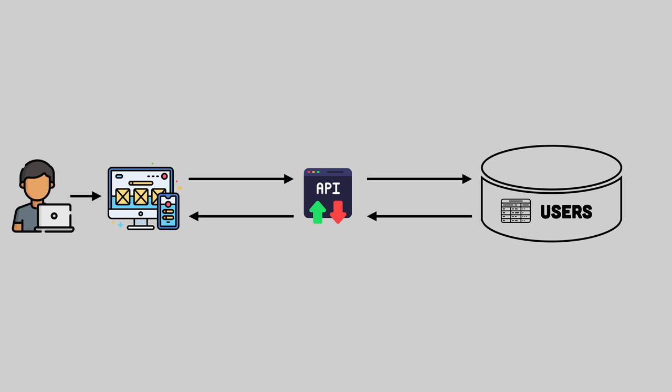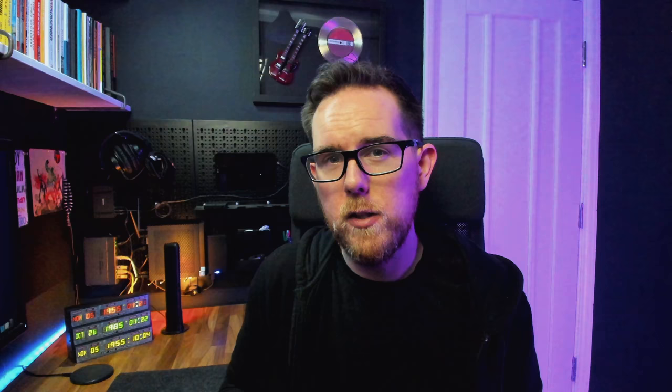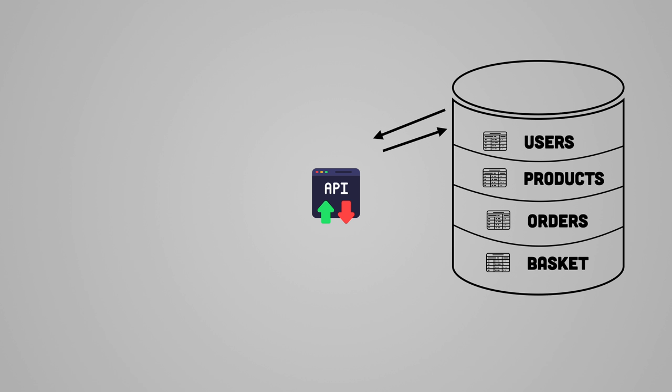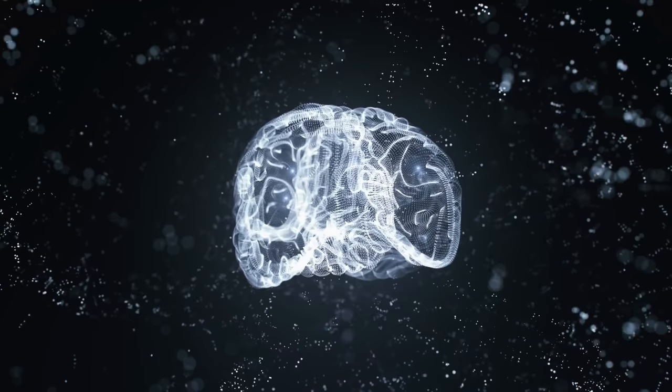All of these endpoints are then used by the front end of your application so that users can interact with it. If you're struggling to work out how to build an application from scratch, then work out what all of your different resources are, work out the bits of information that you want to store, and then build out an API with all the endpoints so that you can interact with all of that data. Then you can build a front end on top of that that allows users to actually use your application.